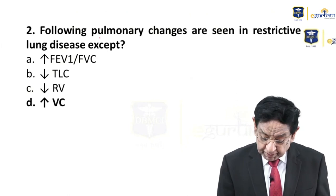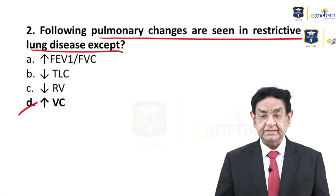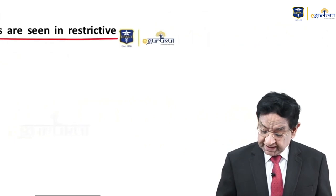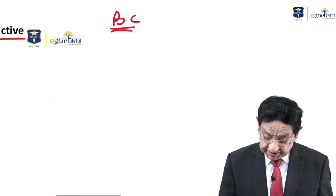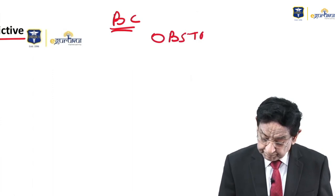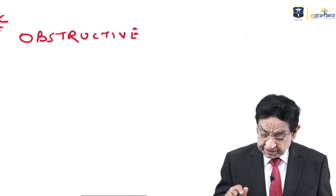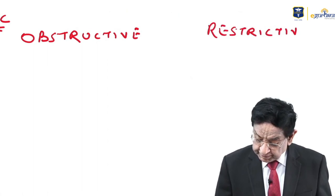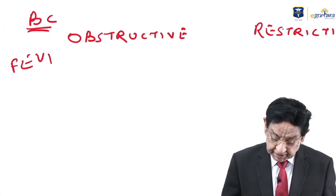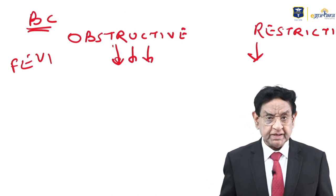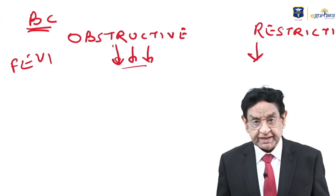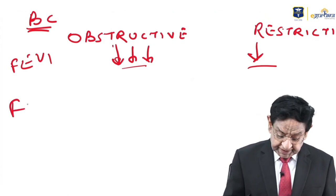Question 2: The following pulmonary changes are seen in restrictive lung disease except — vital capacity is not reduced, this is not the answer. Going to basic concepts: we have two types of disease — obstructive airway disease and restrictive airway disease. FEV1 is reduced in both, but markedly reduced in obstructive and only mildly reduced in restrictive.